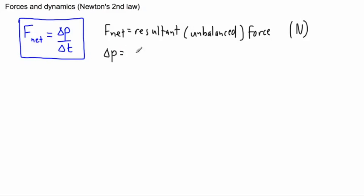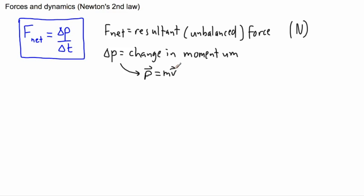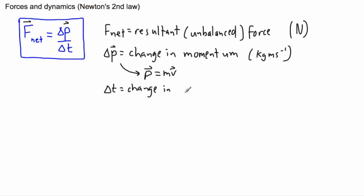Delta p represents a change in momentum. Momentum is equal to m times v — the mass of an object times its velocity. Momentum is technically a vector, so we put vector signs on top. The units of momentum are kilograms times meters per second. Delta t is the change in time, measured in seconds.